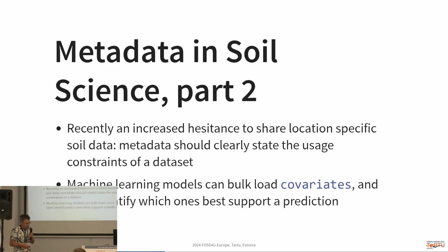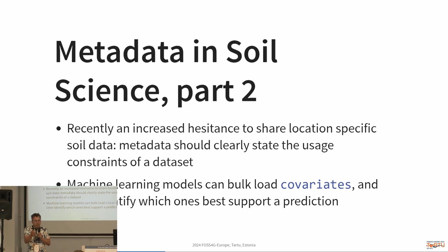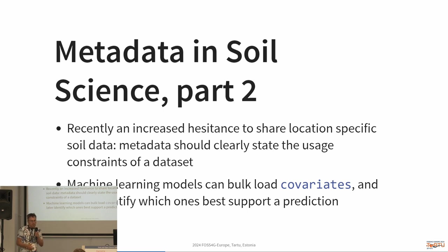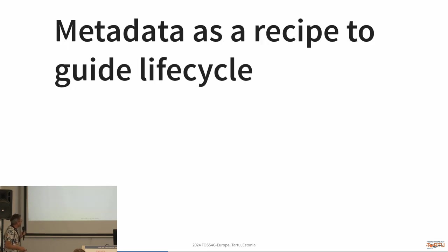Machine learning models eat data — we literally feed them thousands of datasets from Google Earth Engine, Copernicus, and various sources, and the model decides which are relevant for the best prediction. Of those thousands, maybe a hundred stay in the model. We need good metadata on all those thousand datasets to understand the traceability of the predictions later. That's why metadata is especially important for us.